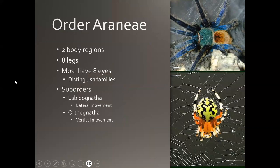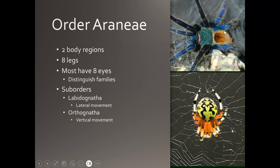Within Class Arachnida, Order Araneae is where our spiders are. They have two body regions that are visibly separated. Looking at a tarantula — specifically a green-bottled blue, my all-time favorite species — the front part is the cephalothorax and the brownish-orange part is the abdomen. We can also see the four pairs of legs and the pedipalps, which are mouthparts, not antennae or extra legs.